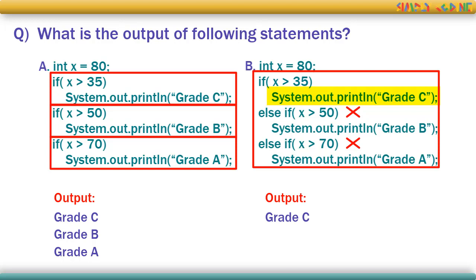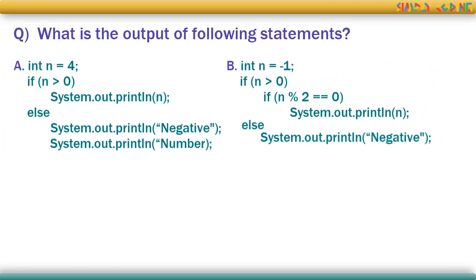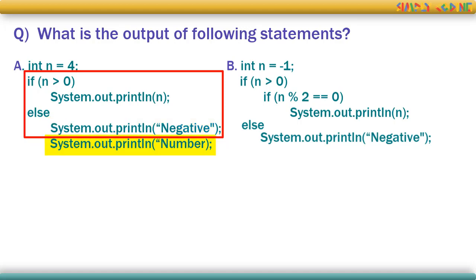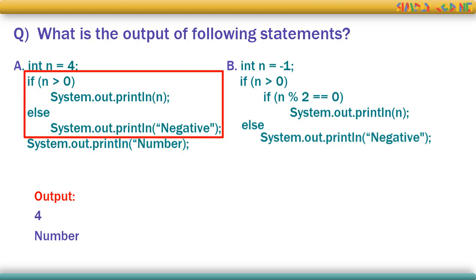It is very important to identify what is actually part of the if-block. For example, in the first question, if you go by the indentation, you might say two statements are part of the else-block and only n which is 4 will get printed. However, there are no curly brackets enclosing those two statements. That means only the first statement is part of else. The next statement is not part of the if-block at all and will always get executed. So 4 and 'number' will both get printed.